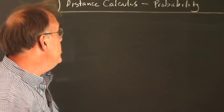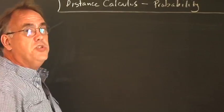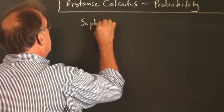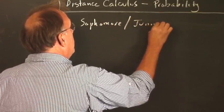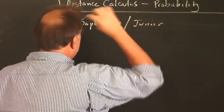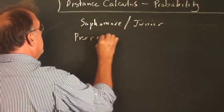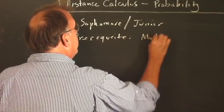Now Probability Theory is a very high course. It is usually at the sophomore or junior level in college, and it has a prerequisite of multivariable calculus.